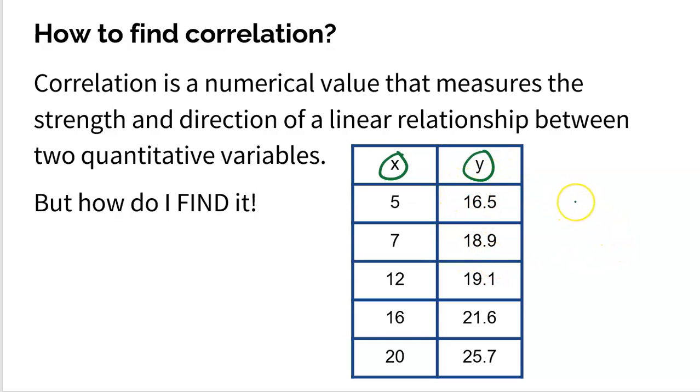So the first thing you actually should always do is take a look at your scatterplot. Your scatterplot should look somewhat linear because if you see a giant curve in it, then finding correlation would be a silly, stupid thing to do anyway. So let's just stop there and make sure that we check to look at our scatterplot and we made sure that it was somewhat linear.